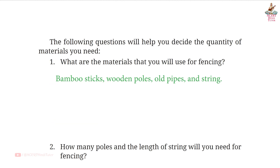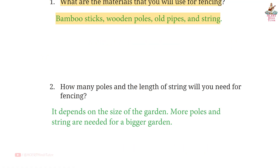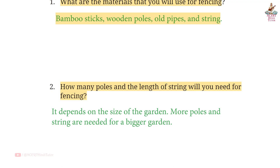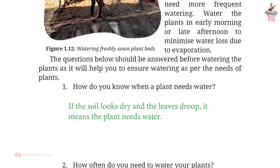Page 21, Question 1: What are the materials that you will use for fencing? Answer: Bamboo stakes, wooden poles, old pipes, and string. Question 2: How many poles and what length of string will you need? Answer: It depends on the size of the garden — more poles and string are needed for a bigger garden.